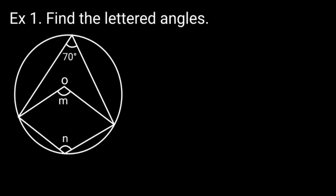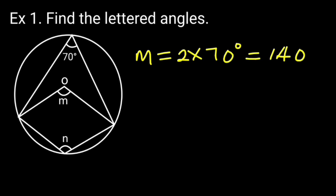Find the lettered angles. Solution: M is equal to 2 times 70 degrees, which is equal to 140 degrees. Reason: Angle at the center is twice the angle at the circumference.